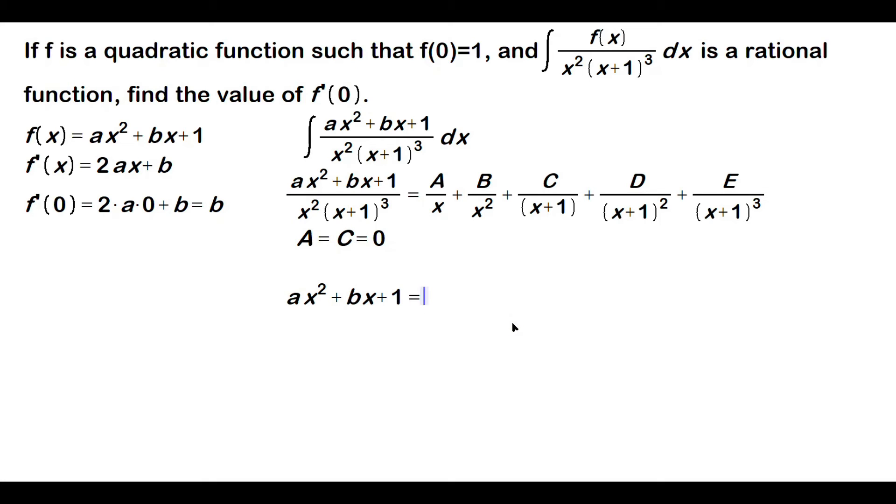So that leaves us then with the following. B, now what happens? When you multiply by x squared times x plus 1 cubed, the x squared part goes away. That's going to leave you with B multiplying x plus 1 cubed.